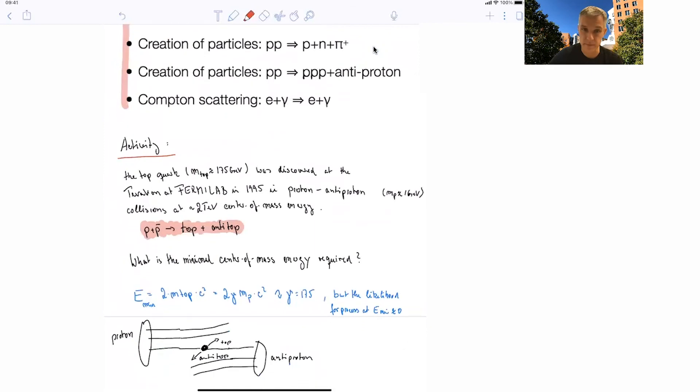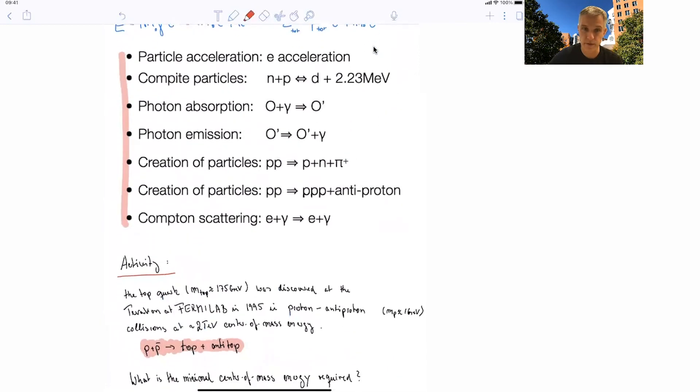So here, yet another example. In 1995, at Fermilab, a proton-antiproton collider, the Tevatron, top quarks were discovered. And we measured the top quark mass to 175 GeV. The center of mass energy at the Tevatron was 1.8, and later almost 2 tera electron volt, and clearly sufficient for the production of top and antitop. But what is the minimal energy in order for this process to occur?